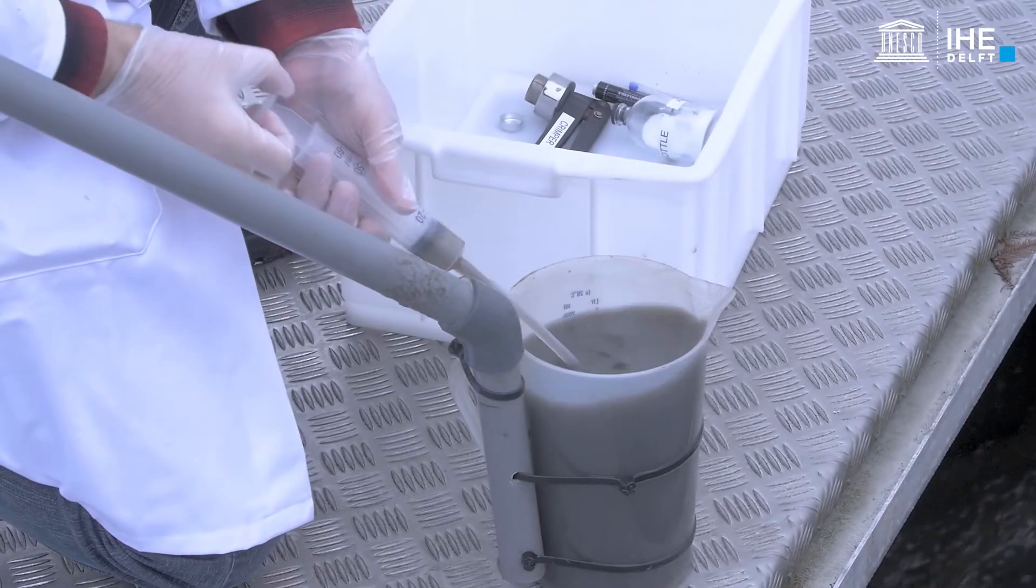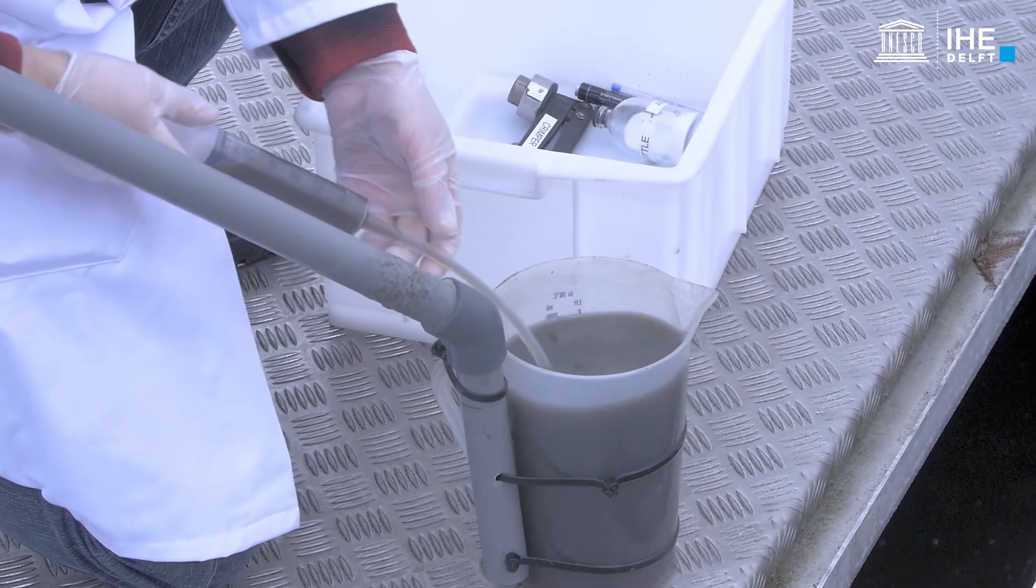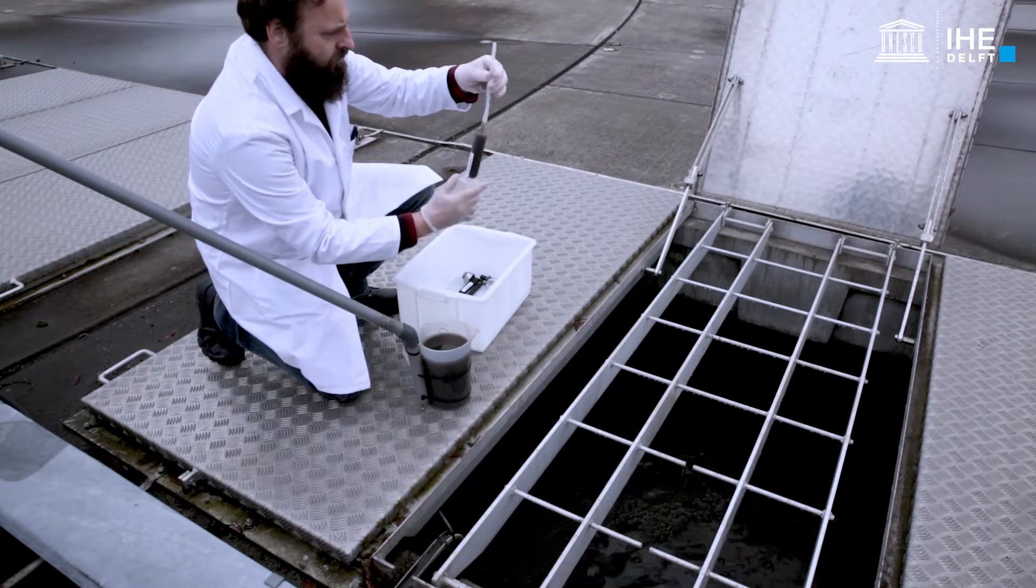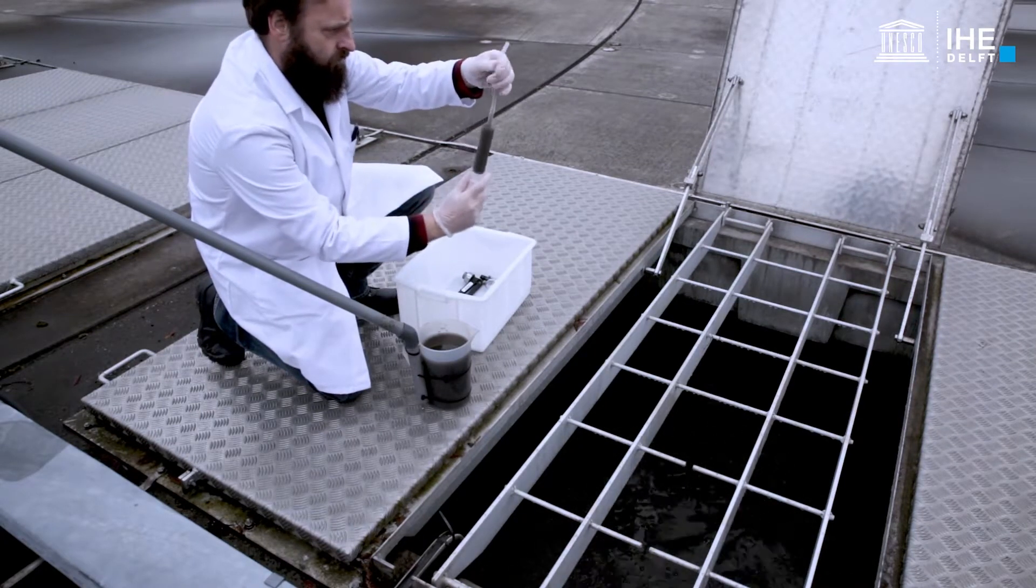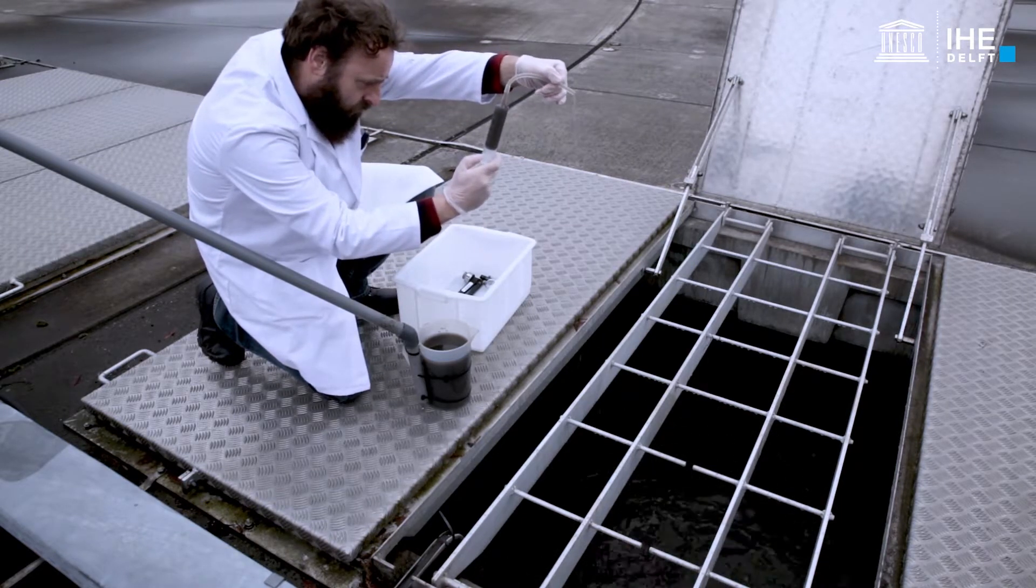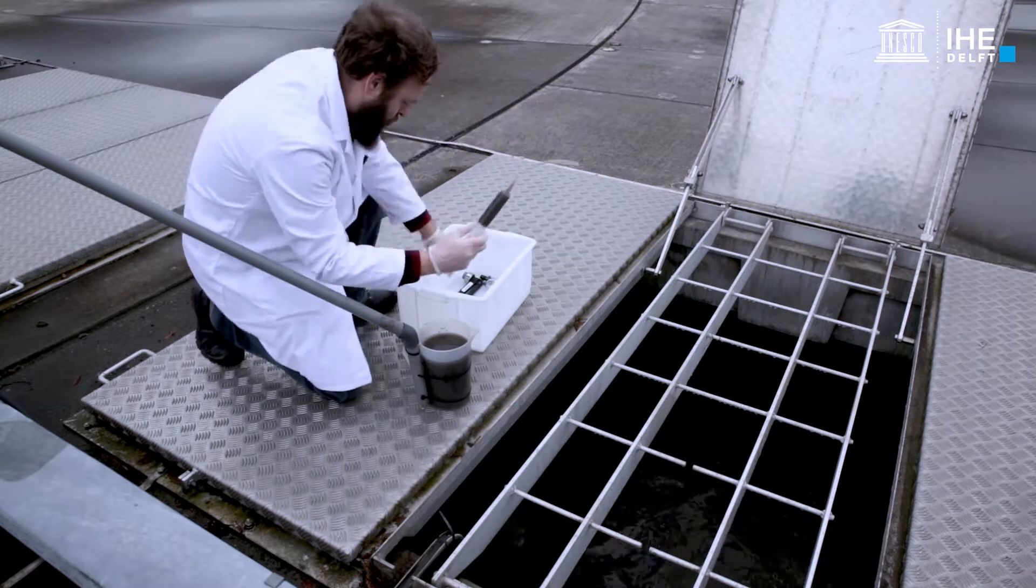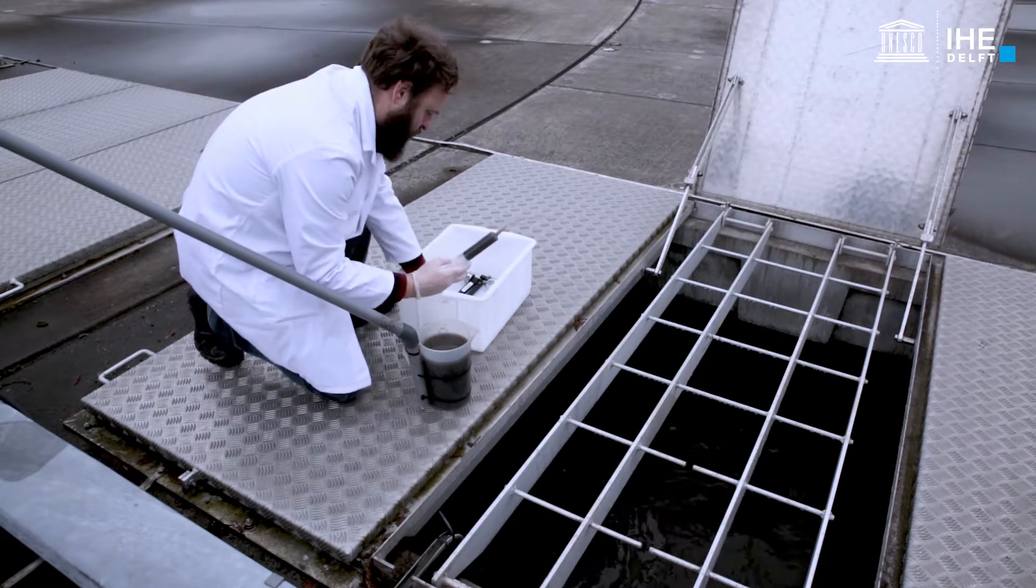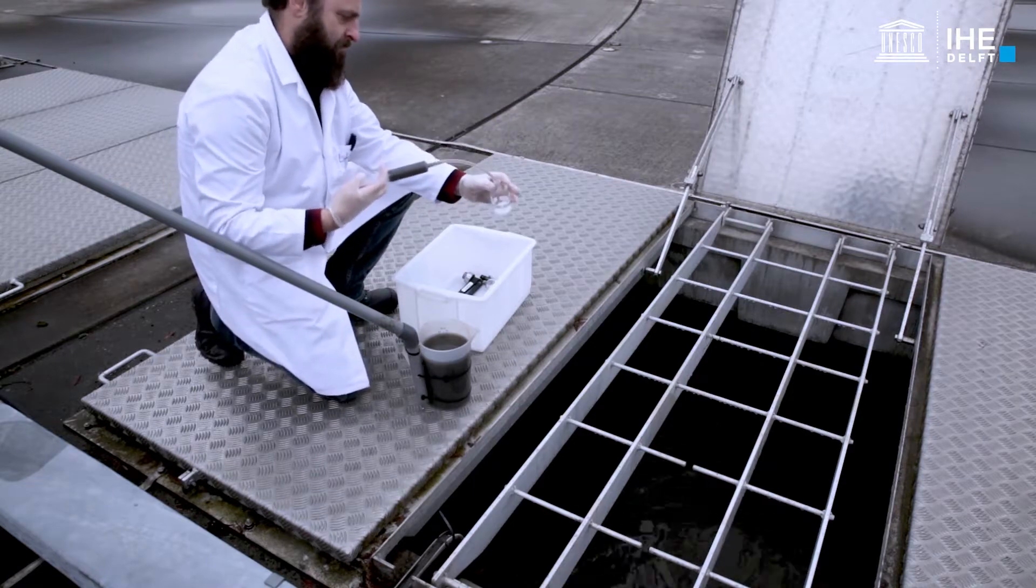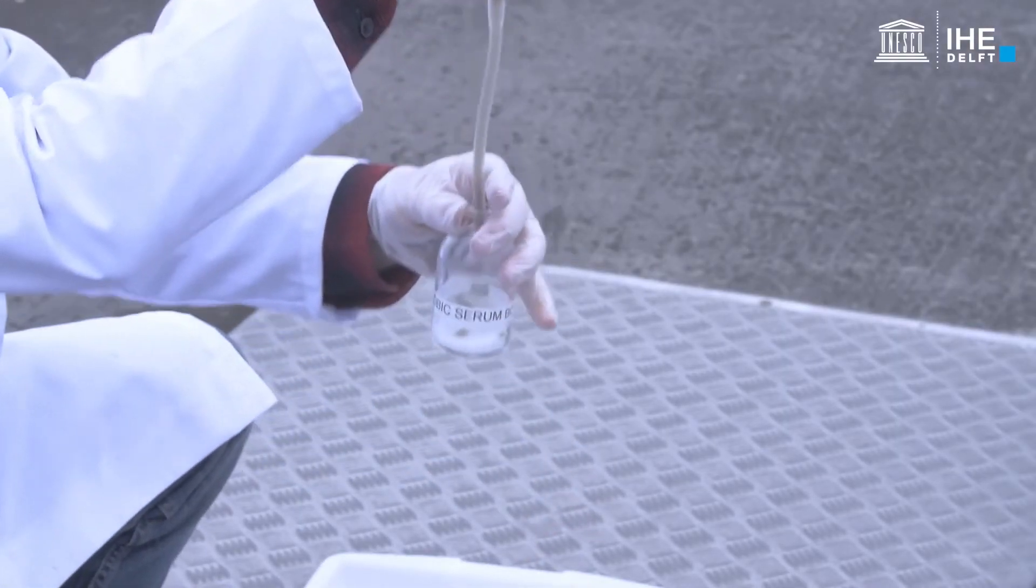Using a syringe with a catheter tip and a 10cm silicon tube, 50ml of sample is added carefully to the serum bottle filled with salt. To avoid the stripping of the gases, the silicon tube should be held under the rising liquid surface when pouring the wastewater sample into the bottle, in order to keep the liquid gas interface as small as possible.